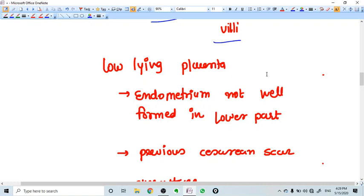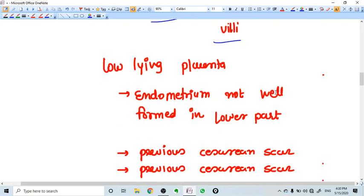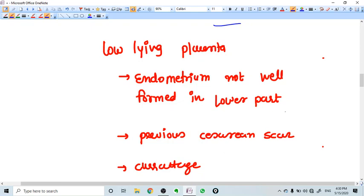For example, if we have low lying placenta or placenta previa in the lower part of the uterus, the endometrium is not well formed as it is formed in the upper part, so it is thin there.